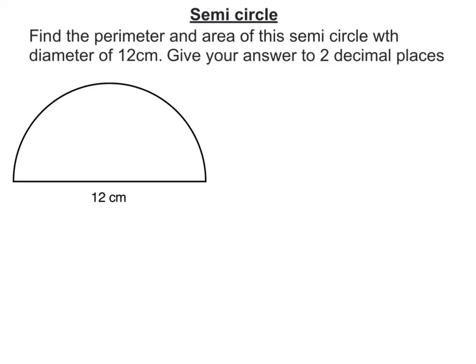In this video we're going to work out the perimeter and the area of this semicircle. We'll start with the perimeter. What you've got to remember is that the perimeter is the distance around the outside of a shape. So it's that curved bit and that straight bit there.